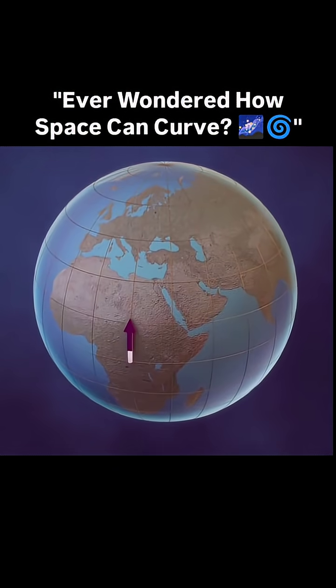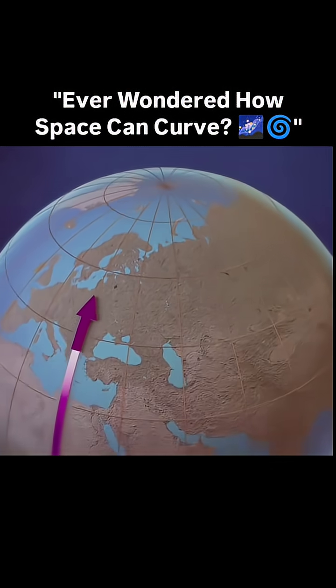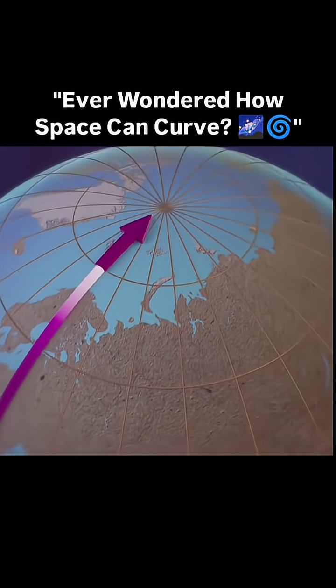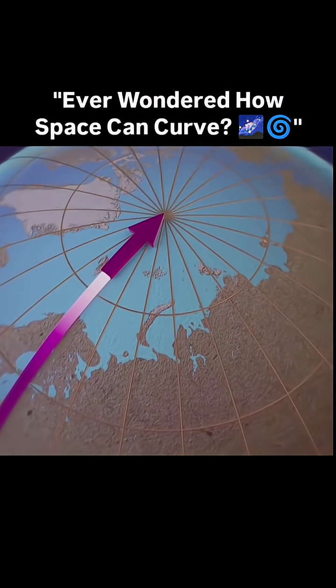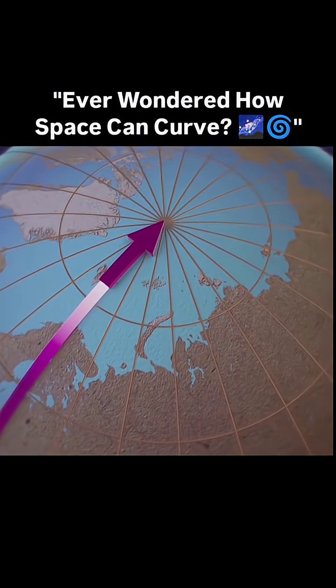However, if you travel in a path due north, there is a limit to how far you can go in that direction. At the north pole, although there's no physical barrier, it's impossible to keep traveling north, since any distance you move would start taking you south.